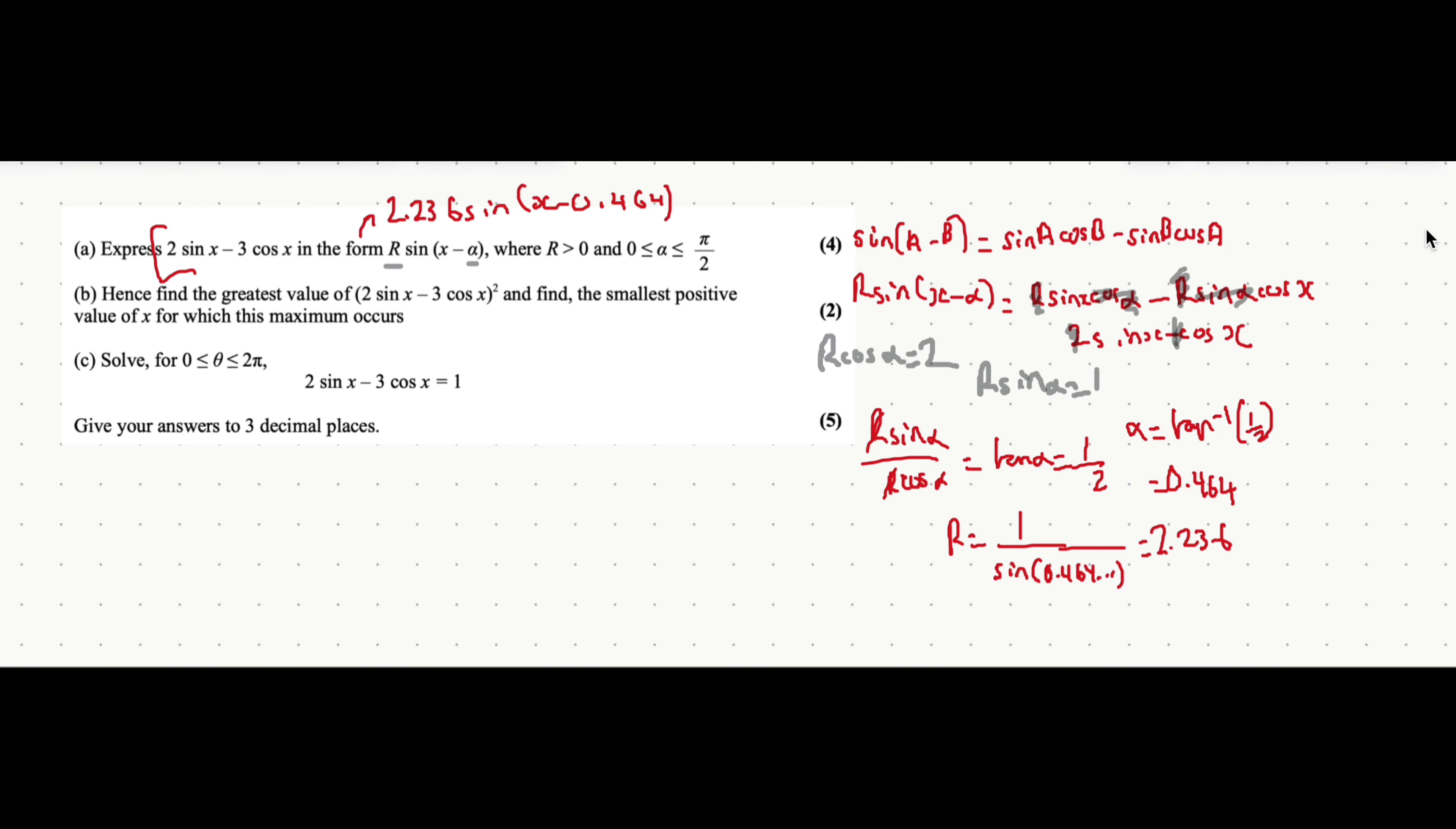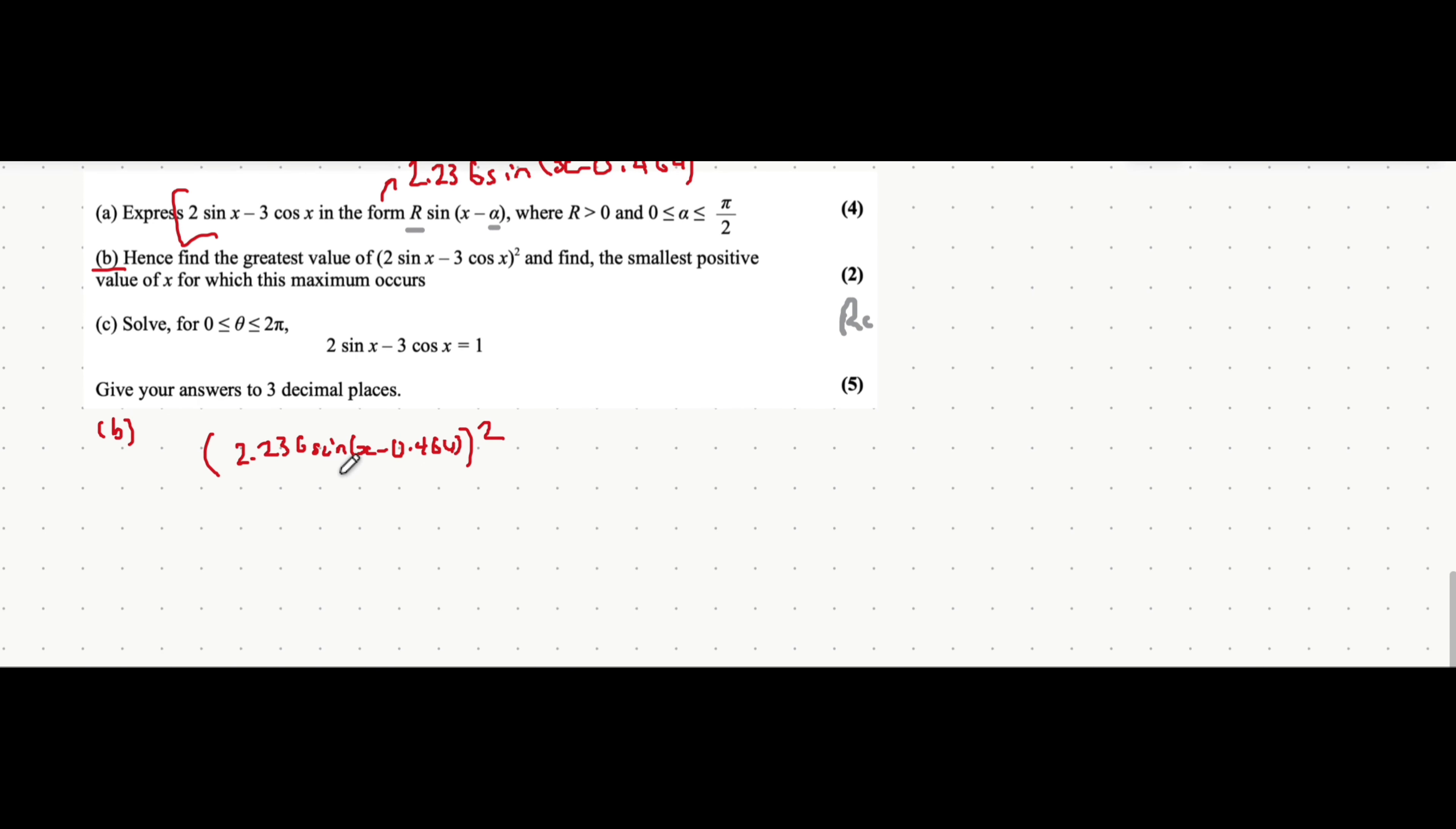Let's now move on to the next part of the question. But before we do actually, I'm just going to erase some of this stuff here. Perfect. Okay, hence find the greatest value of this expression here. What it wants you to do is use the expression that you just formed. So I'm going to replace everything inside the bracket with that expression. So for part b, we'll have 2.236 sine of x minus 0.464, close bracket, all squared. Now if we think about it, the maximum that this could be is when the value of sine is equal to 1.